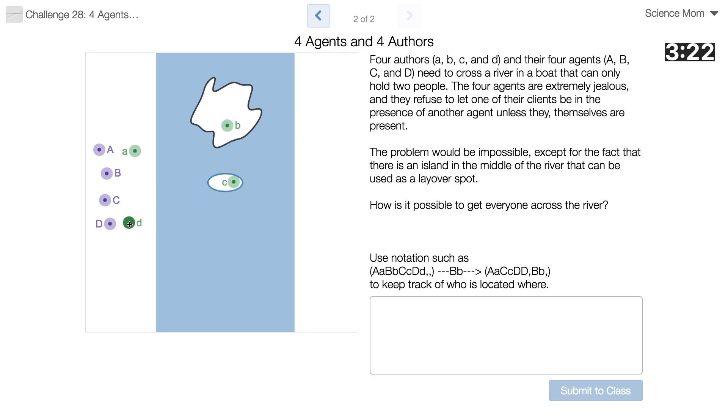But C, little C and little D could just get in the boat together. Sure, those two could drop off. And then they can drop off at the island.